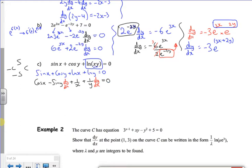Right then. If I take the cos x and the 1 over x over. So I've got minus sine y dy dx plus 1 over y dy dx. That's going to be equal to minus cos x minus 1 over x.